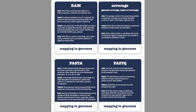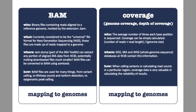Perhaps the most important file type in all of next generation sequencing is a BAM file. These are binary files containing reads aligned to a reference genome. It is important to remember that the human-readable analog of these files are called SAM files. However, the reason we typically keep these files in binary format is they're about 16% of the size in this format.